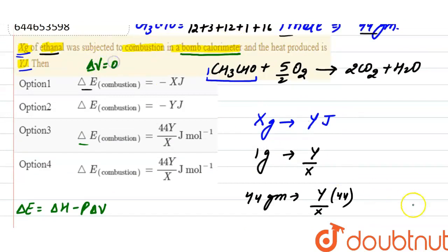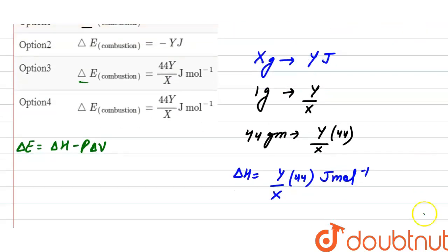So here internal energy of the combustion is equals to enthalpy of combustion, and enthalpy of combustion equals Y divided by X into 44 joule per mole. And the correct option that represents internal energy change of the reaction...